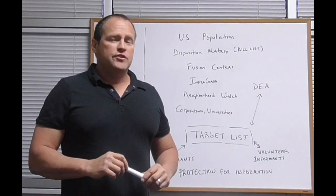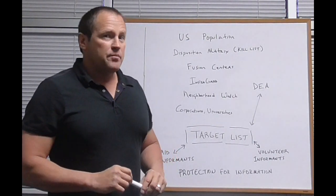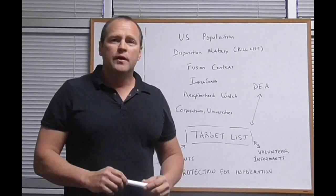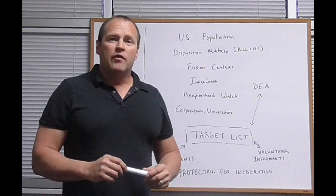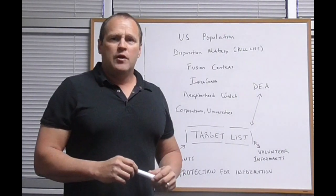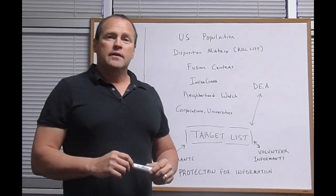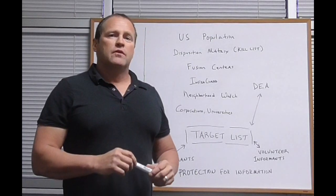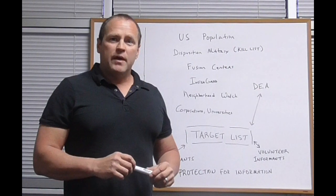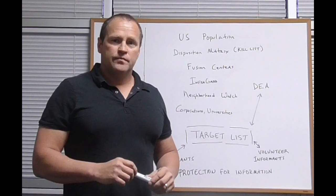Now, another angle these law enforcement entities can use is they can go to corporations and universities and offer them something that is called protection for information. What they can do is say, if you can give us a list of people you don't like or people that you think may be a problem in your organization or people that you may suspect of some illegal activity, we can provide, in exchange for this list, protection for you, your staff, and your families. We can make sure that no harm comes to you or your families due to these people of interest.